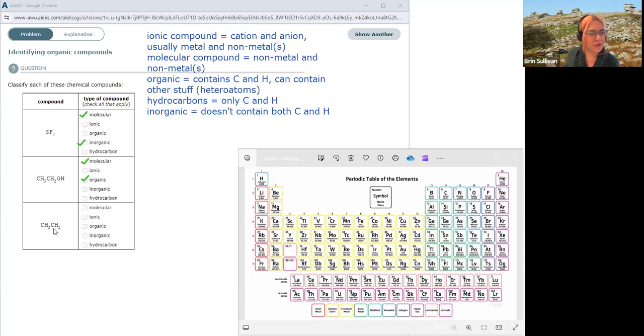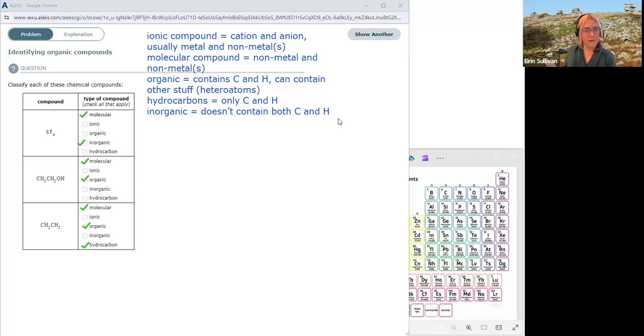Lastly, CH2CH2, no metals hiding in there. So I'm going to confidently, well, as confident as you could ever be, click that it is molecular. Definitely not ionic. And is it organic? Yes, it's only got carbons and hydrogens in it. Is it a hydrocarbon? Yes, it's a hydrocarbon, because it only has carbons and hydrogen. How boring.